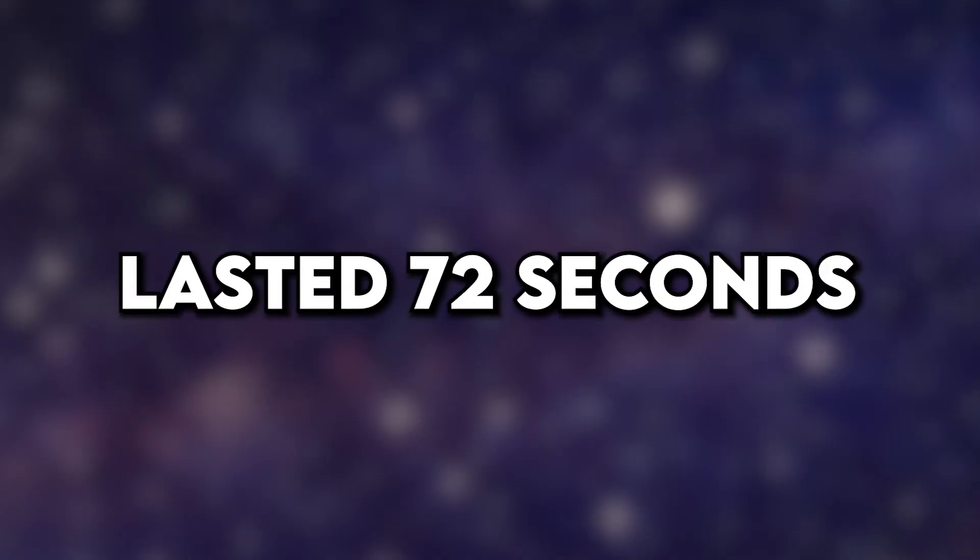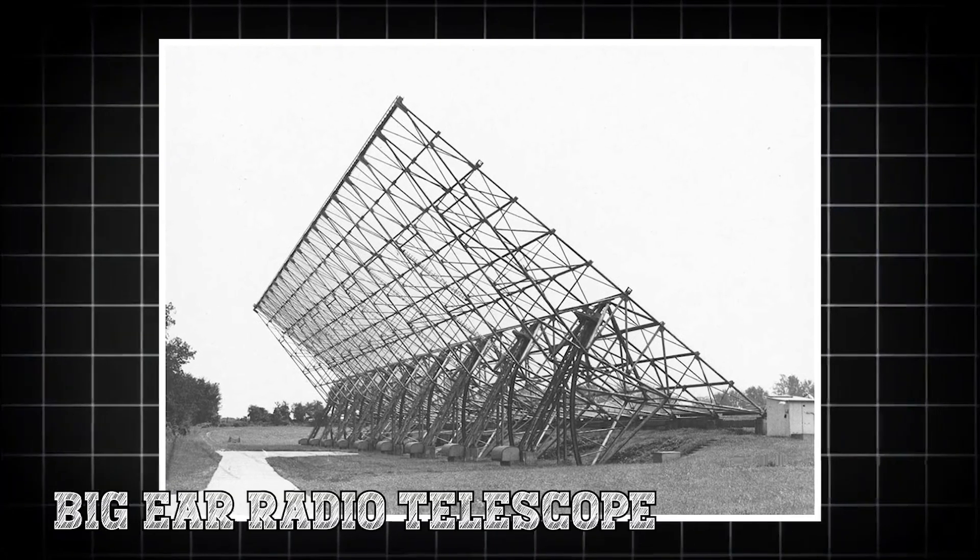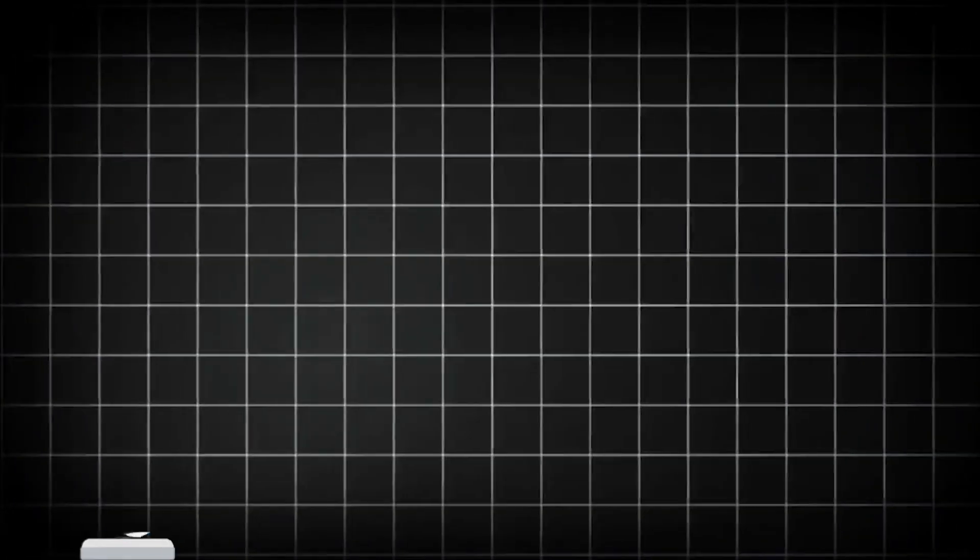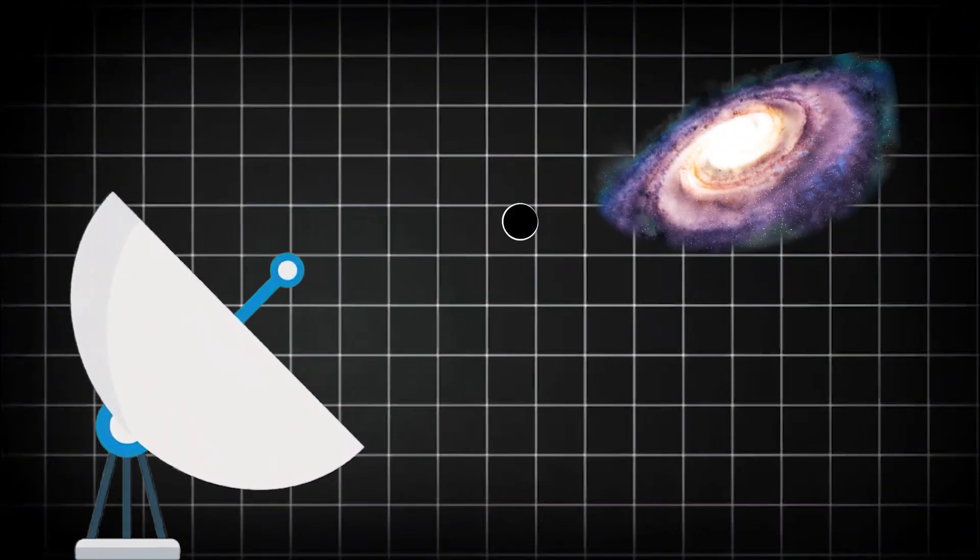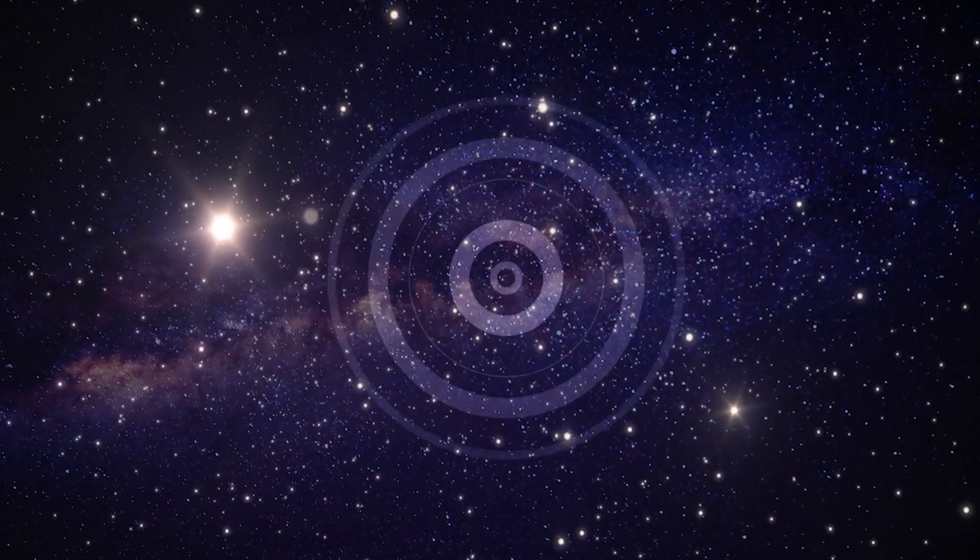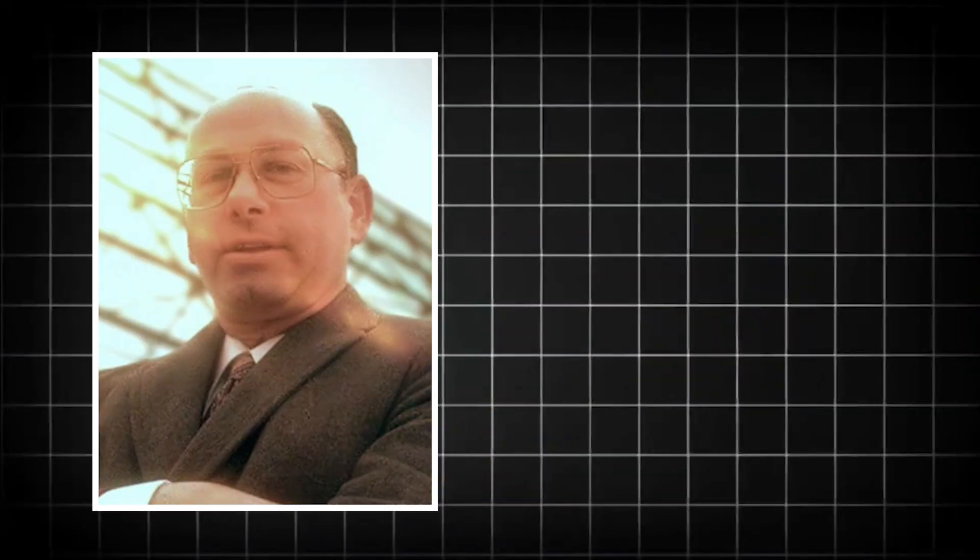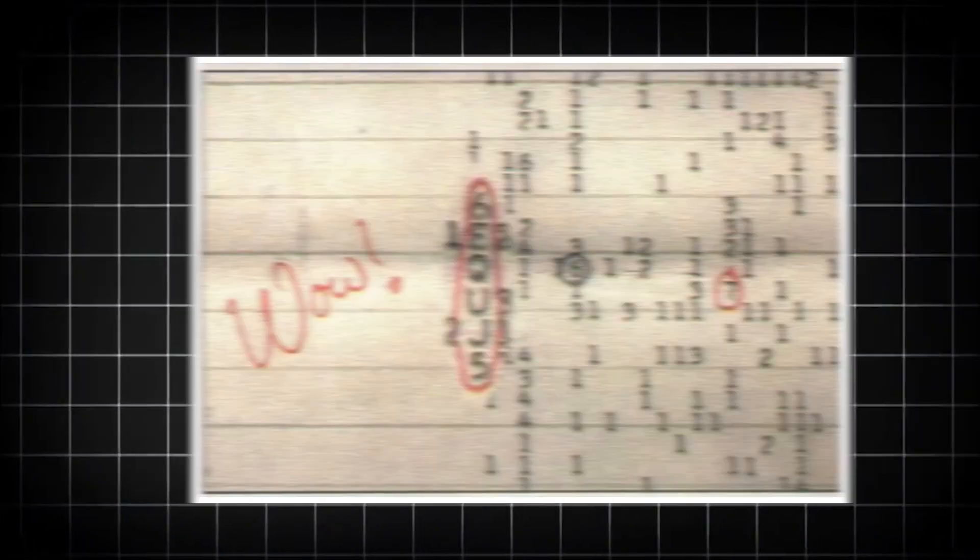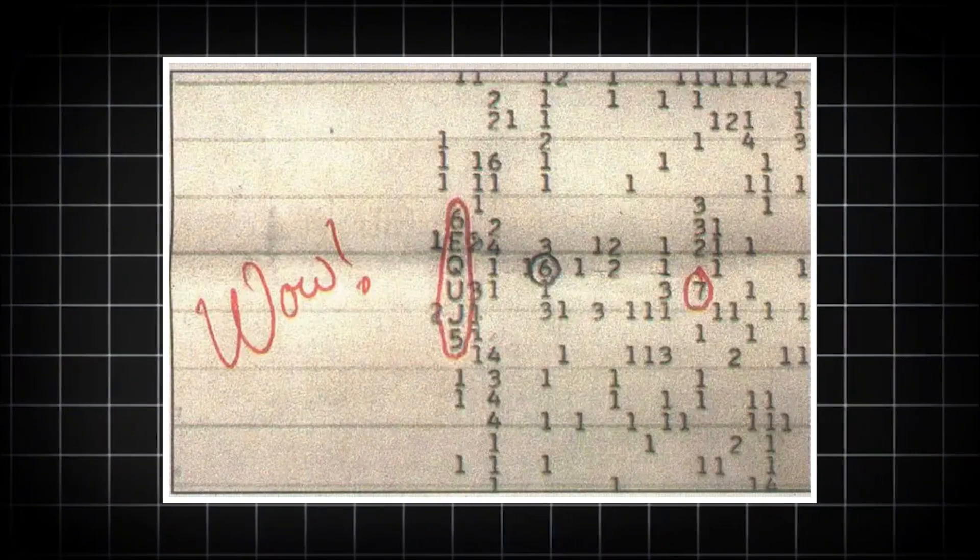It only lasted 72 seconds, but we've spent nearly 50 years trying to explain it. On August 15, 1977, the Big Ear Radio Telescope in Ohio, which was set up to look for signs of life beyond Earth, picked up something totally unexpected. It caught a super strong signal from way out in space, cutting through all the noise like a knife. Astronomer Jerry R. Amen circled the reading in red ink and jotted down one word next to it. Wow!